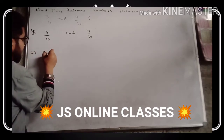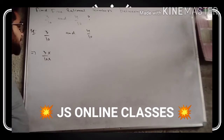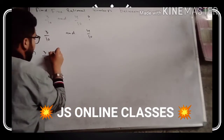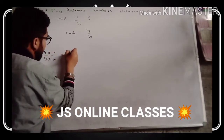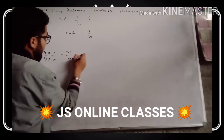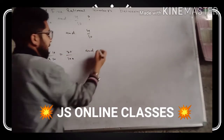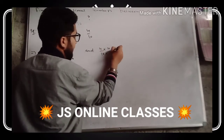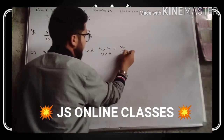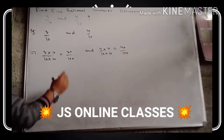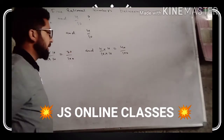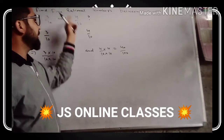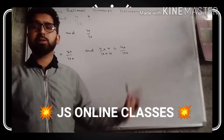We multiply three divided by ten on both sides by ten, giving us thirty divided by hundred. We also multiply four divided by ten on both sides by ten, giving us forty divided by hundred. So we have two boundary lines: thirty divided by hundred and forty divided by hundred. We can find almost eight rational numbers between these two, but here we need only five.